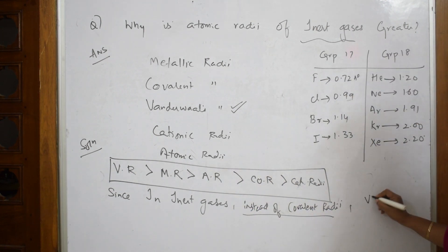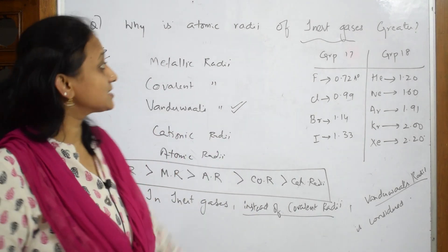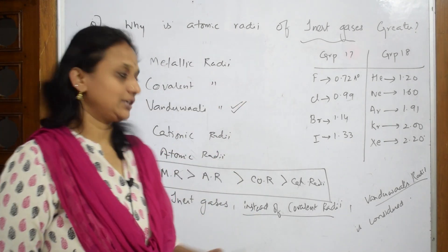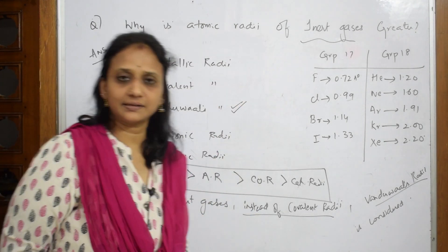So according to this order, van der Waals radius is greater. Hence, inert gases have larger atomic radius. You need to conclude your answer like that.